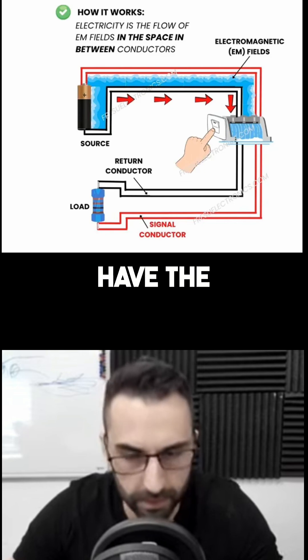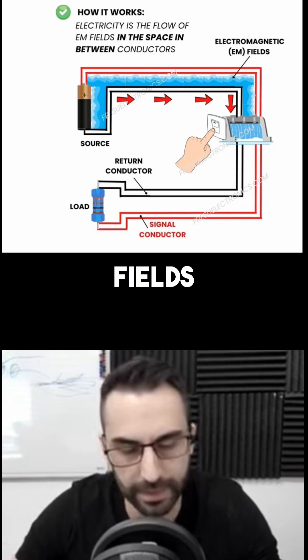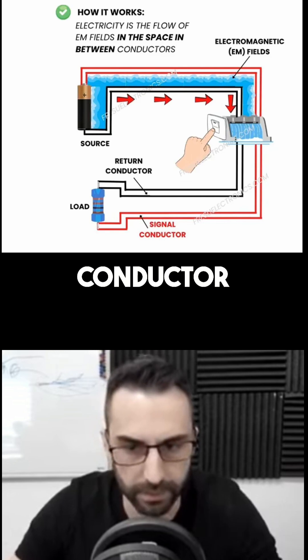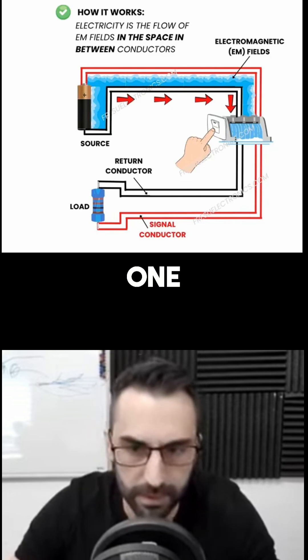In here instead, we have the source of electromagnetic fields. Then we have the top conductor, which is this red one on the top. We have the return conductor here, which is the black one.